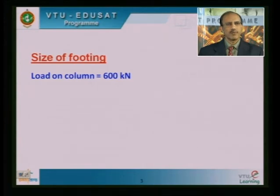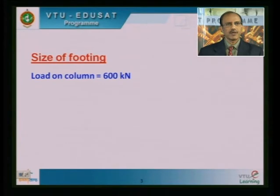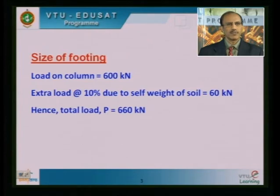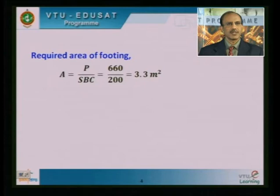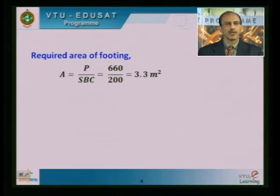The load coming from the column is 600 KN. The first thing we do is increase this load by 10 percent to account for the self weight of the soil, which gives 60 KN. We add the two loads and get a total load of 660 KN. Now we try to find the area required to resist this load of 660 KN. It is quite a simple exercise.